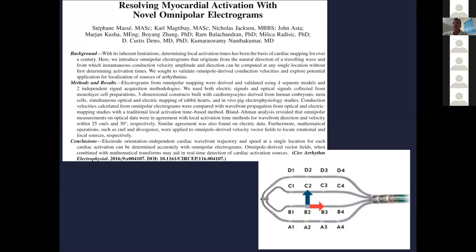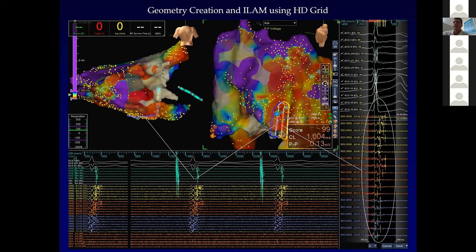We used a multipolar mapping approach with the grid catheter, seeing these different potentials. Here's our inferior scar. I have a CS catheter up here — there's the atrial signal. Your ECG leads are on top, far field ventricular signals. Here's all of our grid signals, and you see these very nice late signals. Our setup is to look between and across every spline, which is why you see all that data.